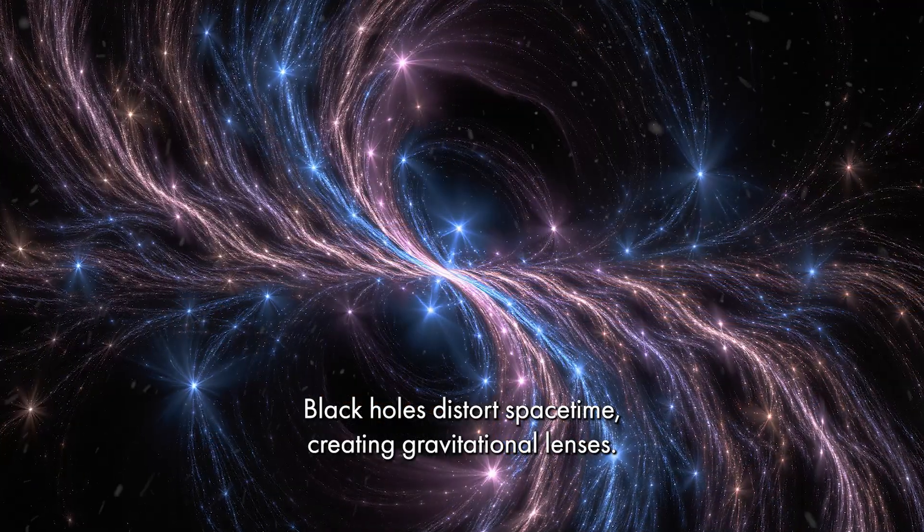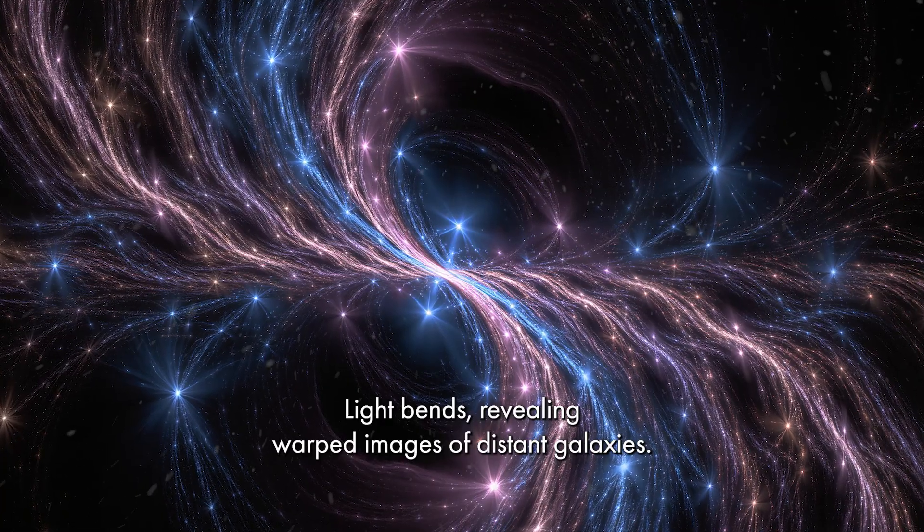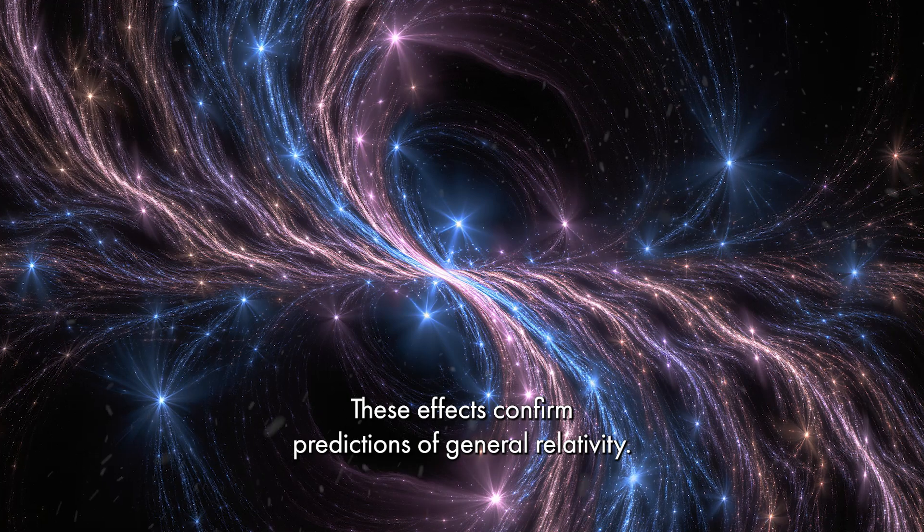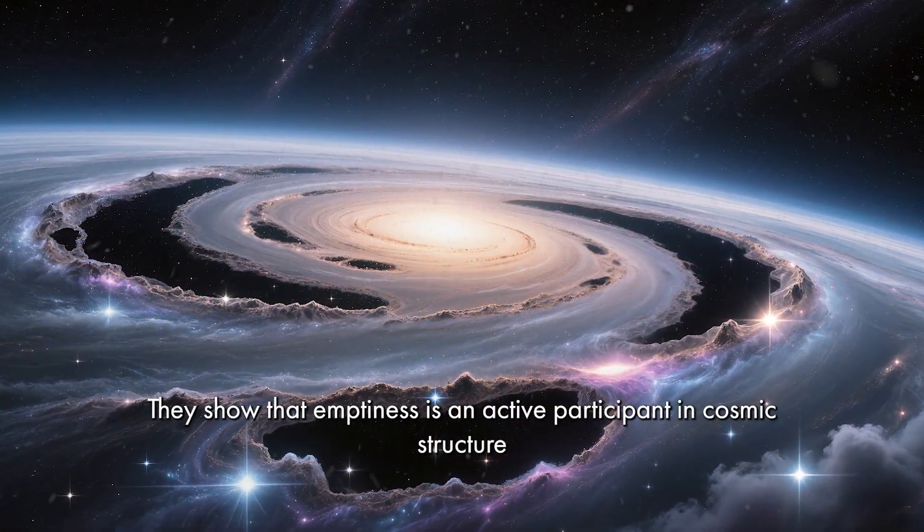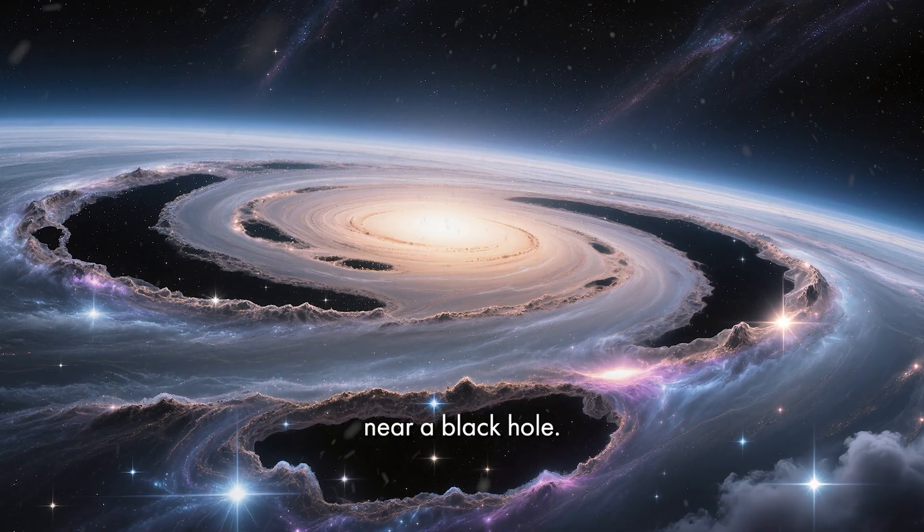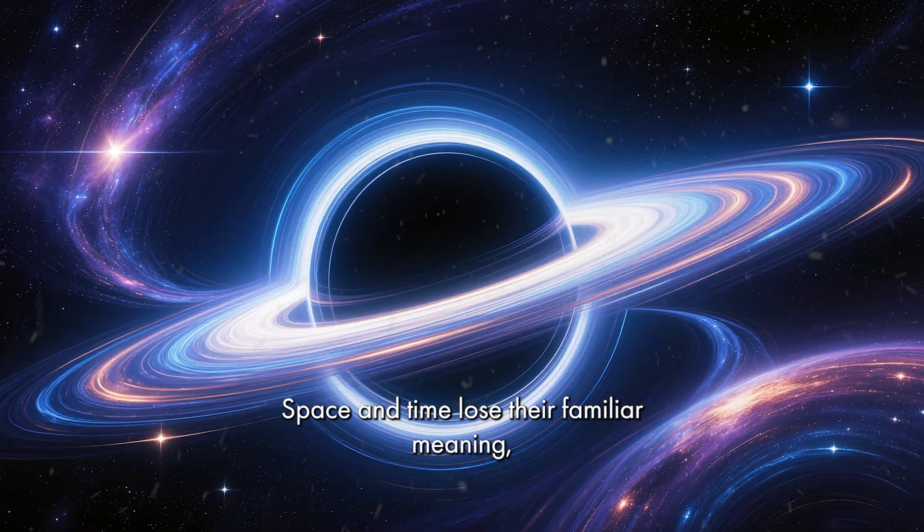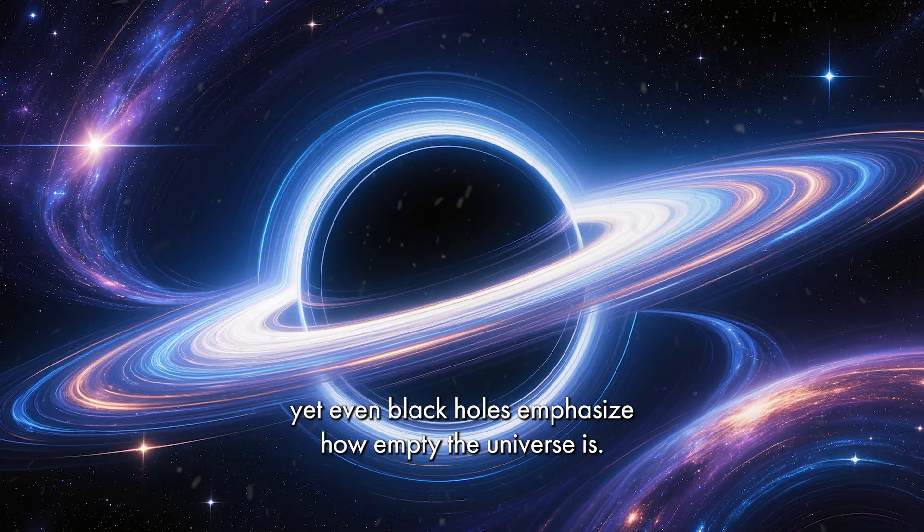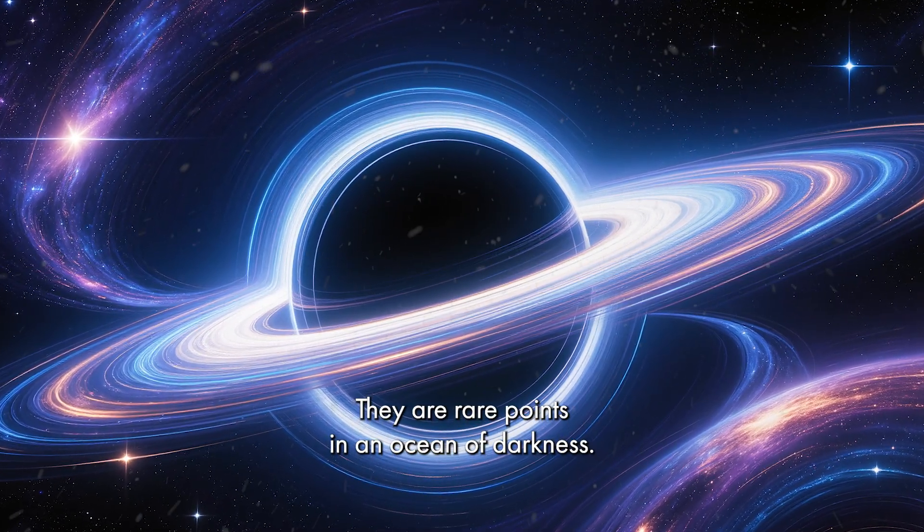Black holes distort space-time, creating gravitational lenses. Light bends, revealing warped images of distant galaxies. These effects confirm predictions of general relativity. They show that emptiness is an active participant in cosmic structure. Near a black hole, time slows. Relative to distant observers, space and time lose their familiar meaning. Yet even black holes emphasize how empty the universe is. They are rare points in an ocean of darkness.